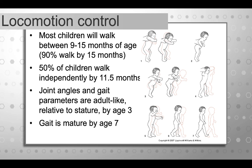One of the most common questions families ask is when will my child walk. Most children will walk between nine to 15 months of age, with the average age of first steps at about 11 and a half months — roughly around the first birthday. Ninety percent walk by 15 months, though 10% of typically developing kids walk later. A child walking after 15 months raises at least a yellow flag to look more closely. Joint angles and gait parameters are adult-like relative to stature by about age three, with fully mature gait by about age seven.